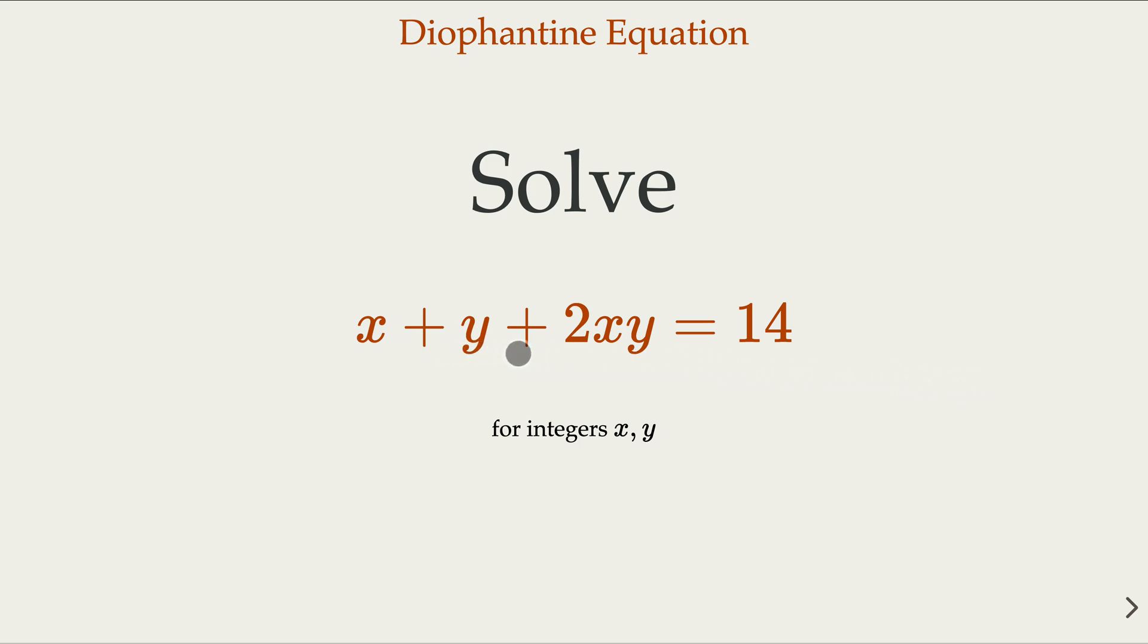We need to find integer solutions for this equation. Whenever you see a cross term and linear term here, you want to think about factoring, that is try to factor this expression into the product of two linear terms.